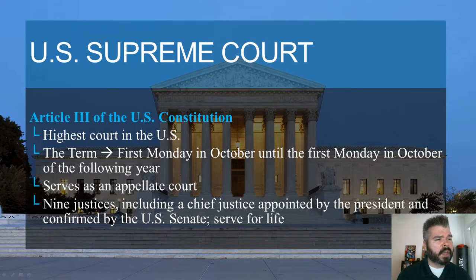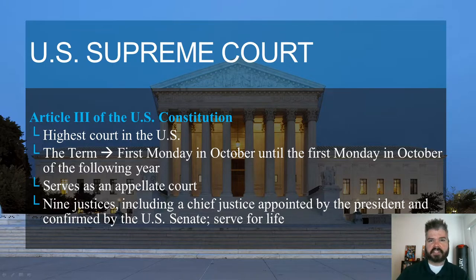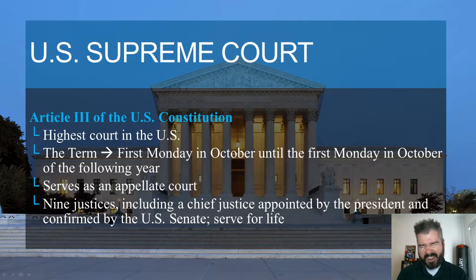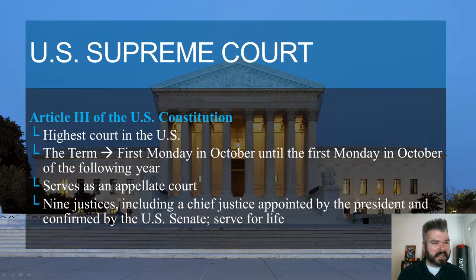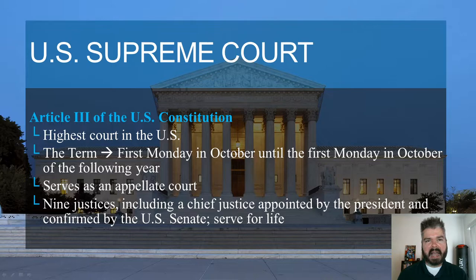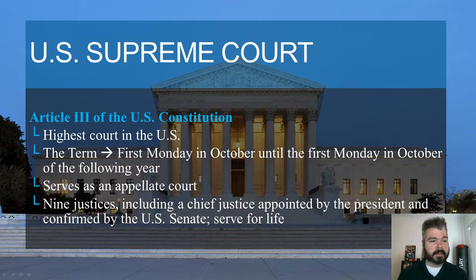Remember that Articles 1, 2, and 3 establish three different branches of government. Article 1 establishes the legislature, Article 2 the executive, and Article 3 the judiciary — specifically the U.S. Supreme Court. Article 3 of the Constitution is only 377 words. As the name implies, it establishes the highest court in the land — the highest court that anyone can appeal a case to in the United States.